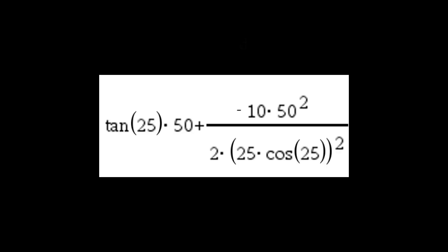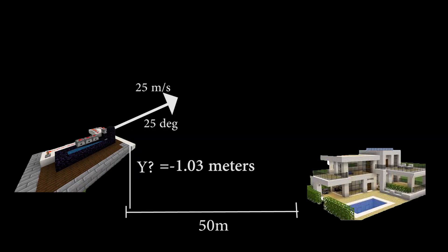Now if we plug in our given values we can yield a change in y. This produces an answer of about -1.03 meters, indicating that the base would be below the launch point.